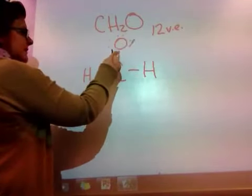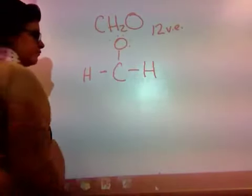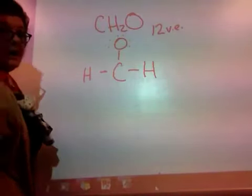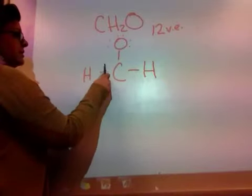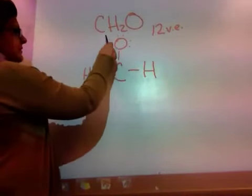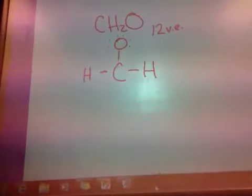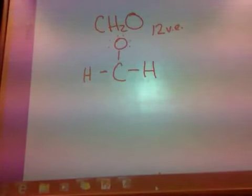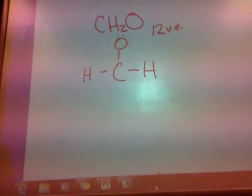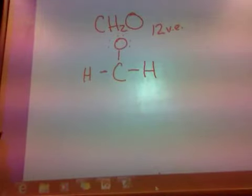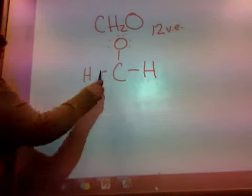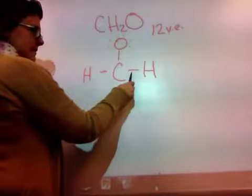Oxygen needs 8 electrons around it, so we add them: 1 through 8. Let's count how many electrons we have right now — 1 through 12. We've fulfilled our 12 valence electrons. But is carbon okay as it is right now? Looking at carbon I see only 1, 2, 3, 4, 5, 6 electrons. Carbon would ultimately want 8.